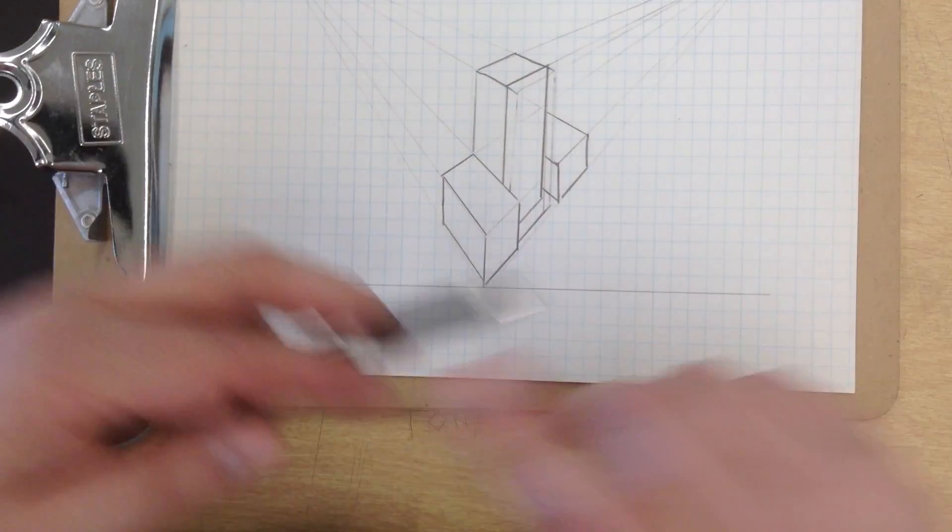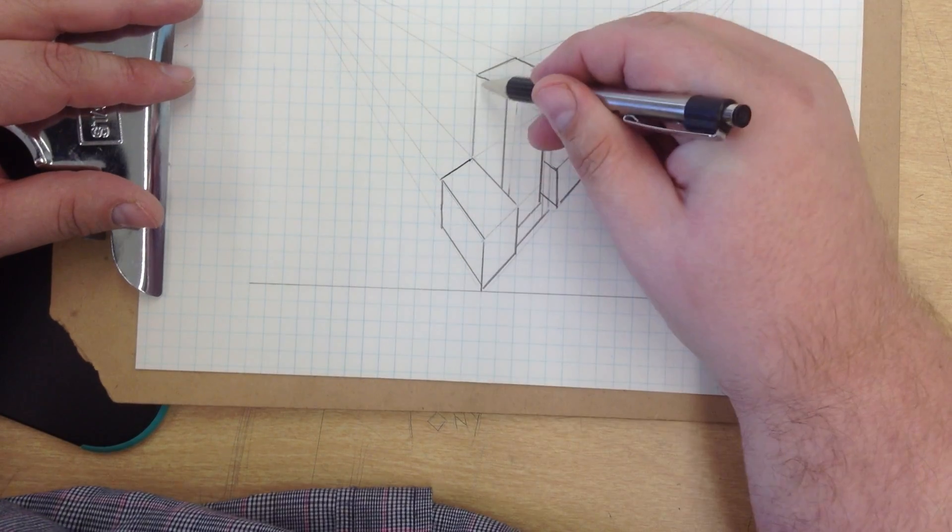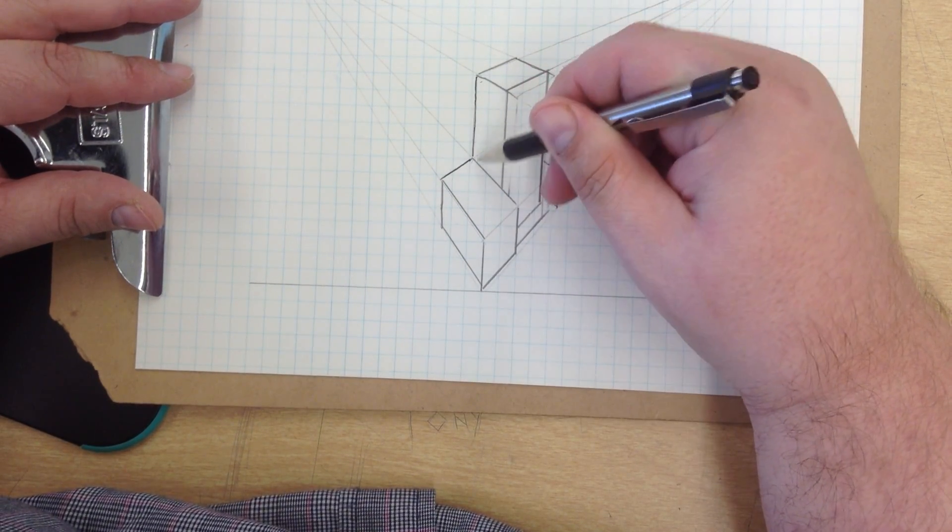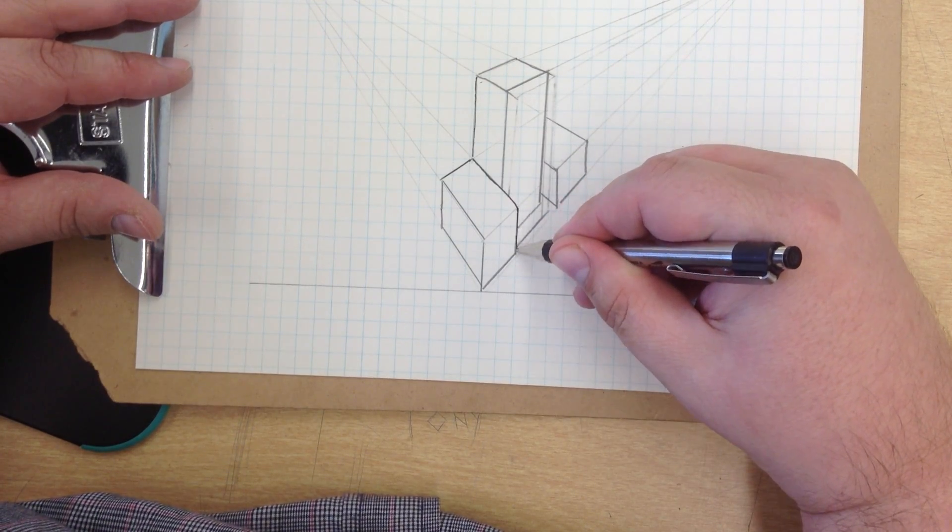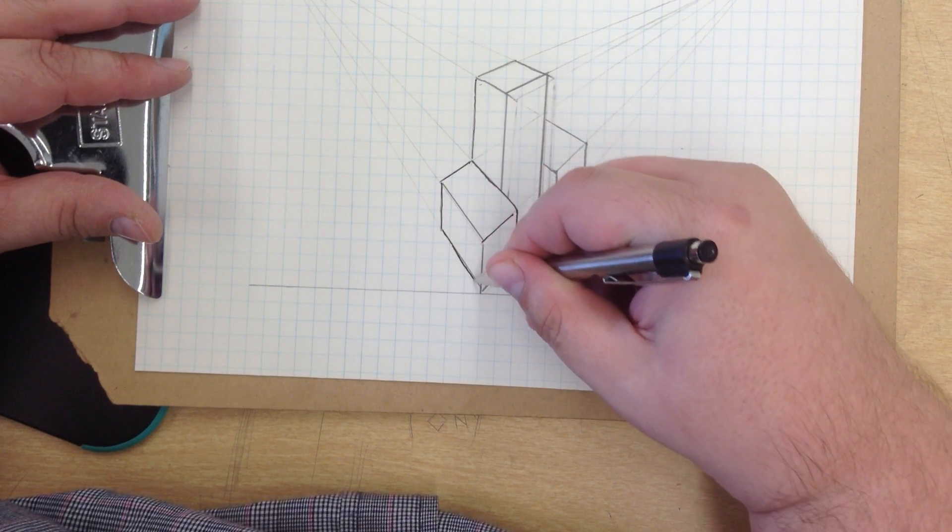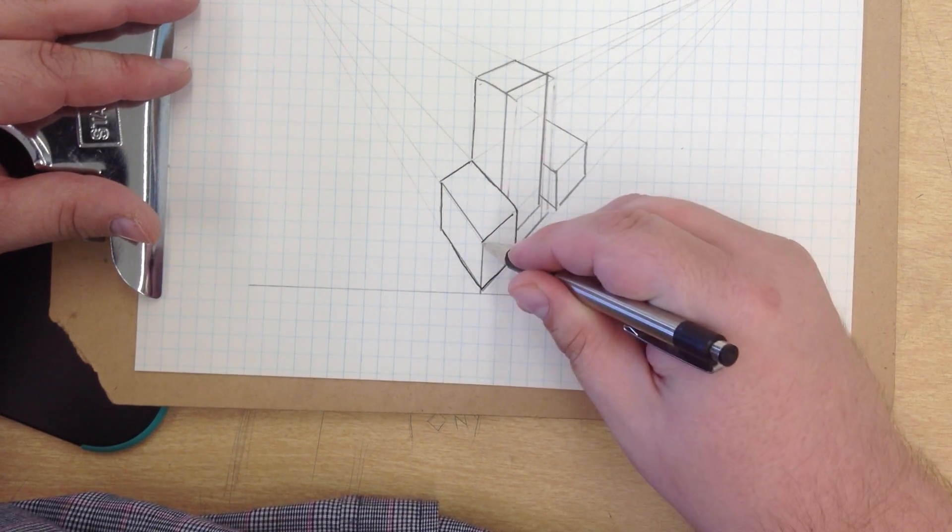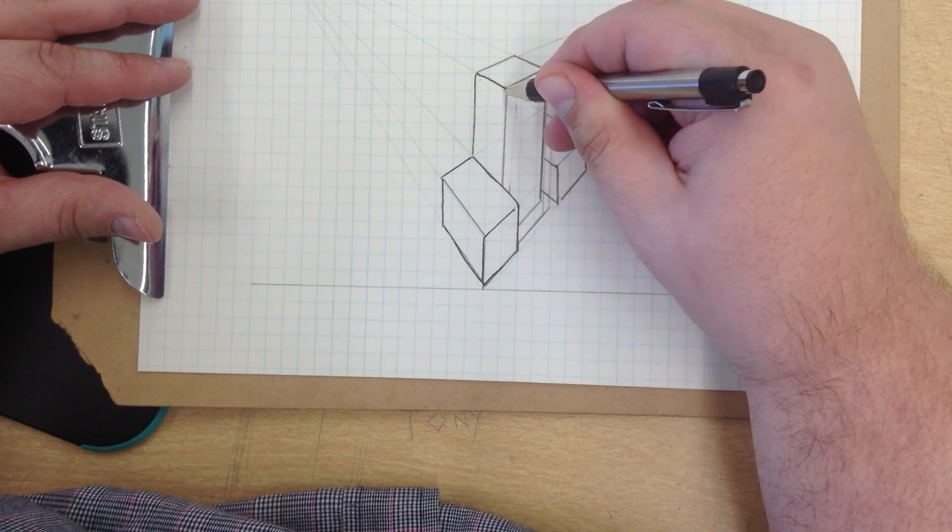Okay, so now that I have all that done, I can go over my lines in pen. Make them a little bit darker. If you'd like to use a straight edge for this, you absolutely can. Straight edge helps to avoid any shaky hands that you might have.